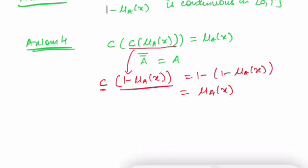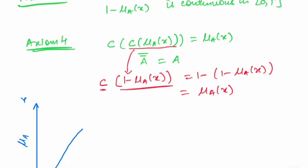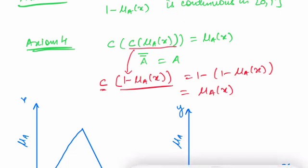Let us take a general example to see how the complement behaves. Suppose we have a triangular fuzzy set — here the x-axis represents the domain and the y-axis represents the membership grade. We want to find the standard complement of this triangular fuzzy set.